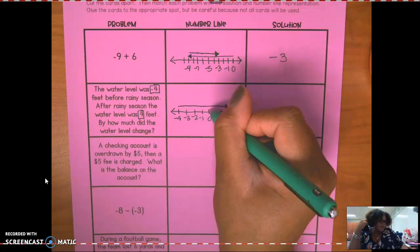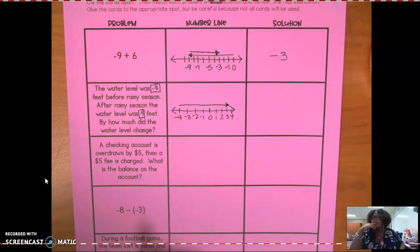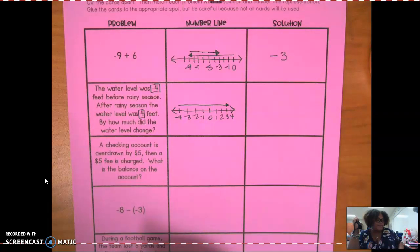I added eight. One, two, three, four, five, six, seven, eight. So by how much did it change? It changed by what kind of eight? A positive or negative? It changed by a positive eight.